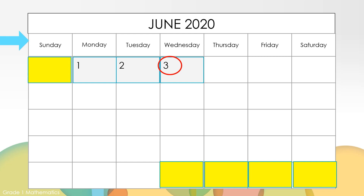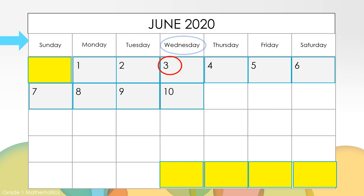What day of the week is June 10th? Can you point on the screen where you think June 10th will be? Here is June 10th — it is a Wednesday.